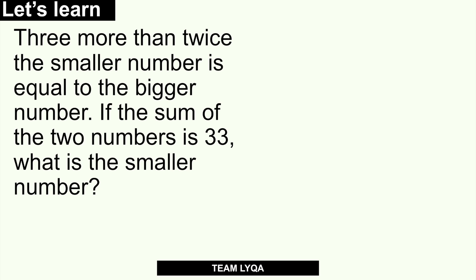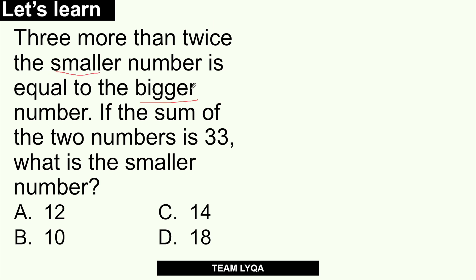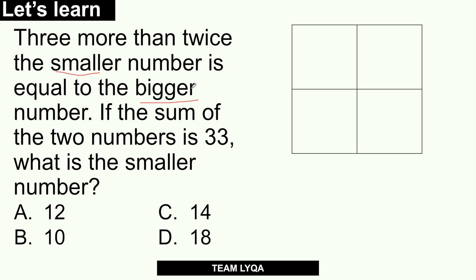Now, if you don't have options and need to use algebra, you would have to solve it the long way. But in the civil service exam or college entrance exam, there are usually multiple choice options. The traditional method: if the sum of the two numbers is 33, one of them will be x, and the other will be 33 minus x. So the smaller number is x. Then your equation comes from the sentence: 'three more than twice the smaller number equals the bigger number.' That gives you: 3 plus 2x equals 33 minus x.